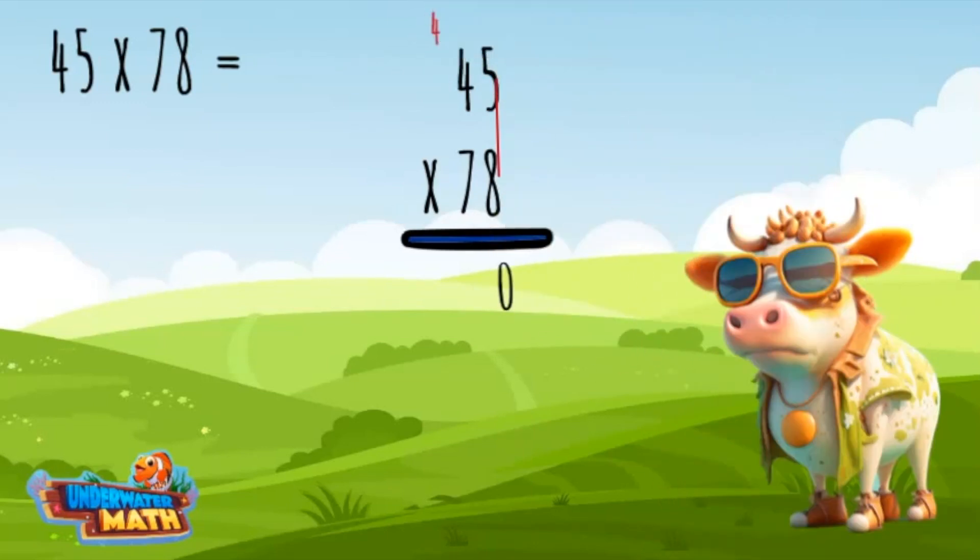Then we multiply eight times four and add the four that was carried over for a total of 36. Time to move to the tens place. Put a zero in the second line because we are working the tens place.